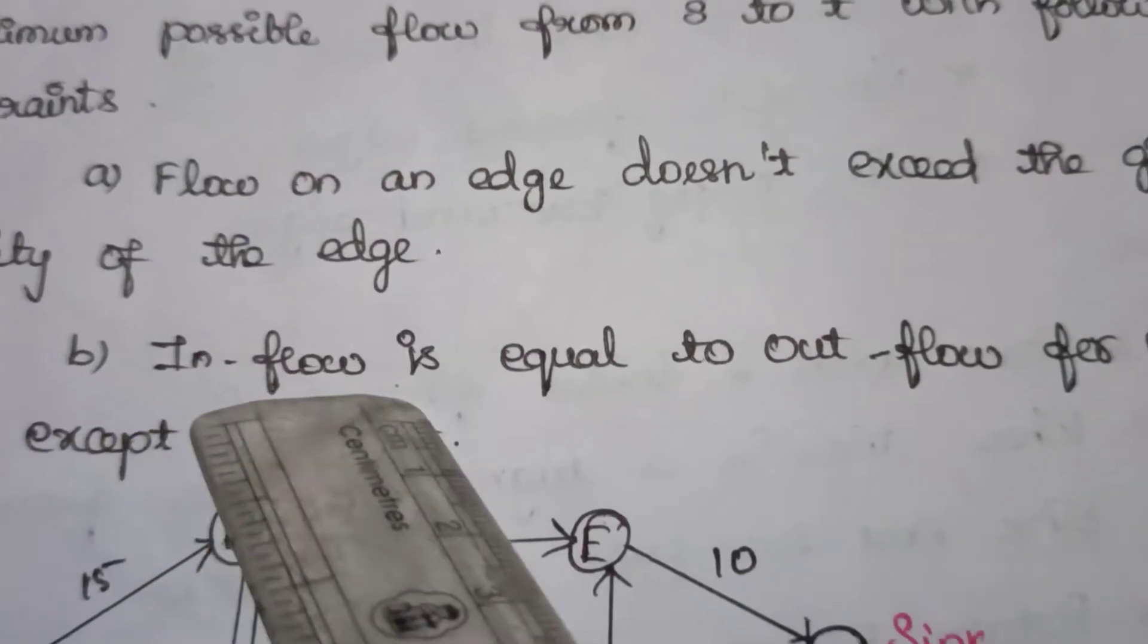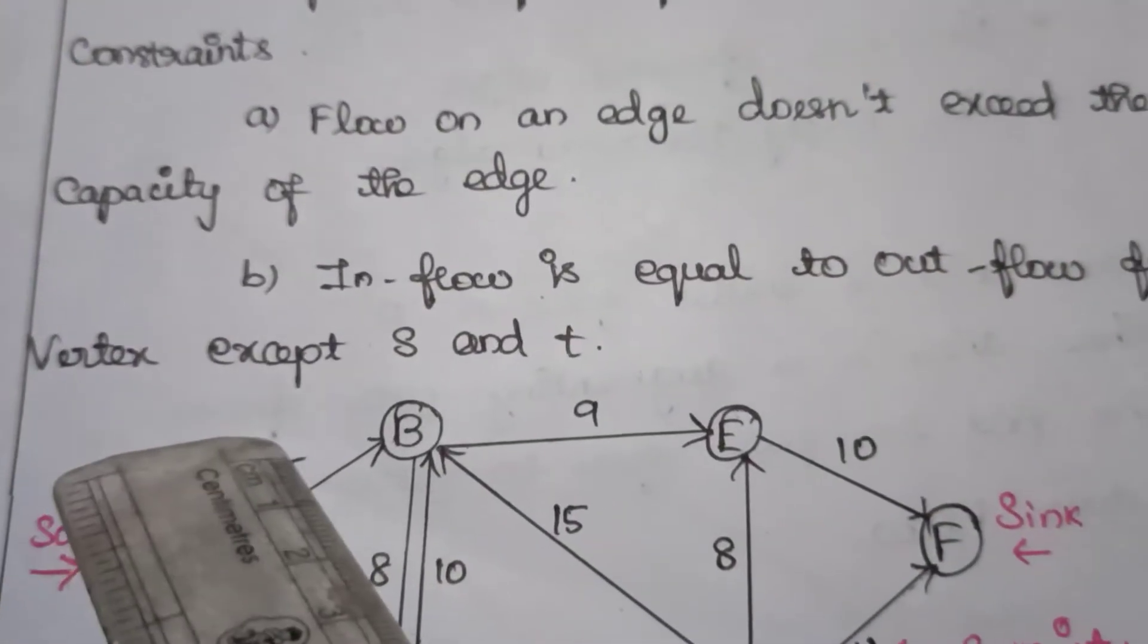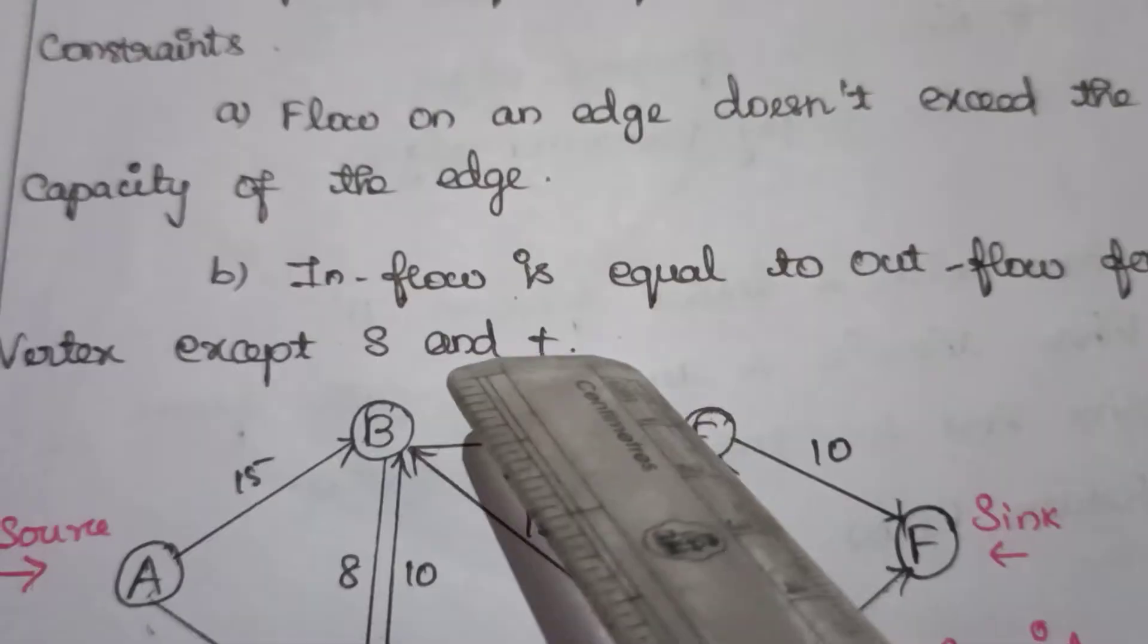Look at constraint number two: inflow is equal to outflow for every vertex except s and t.